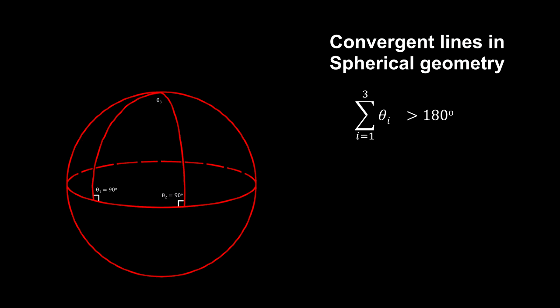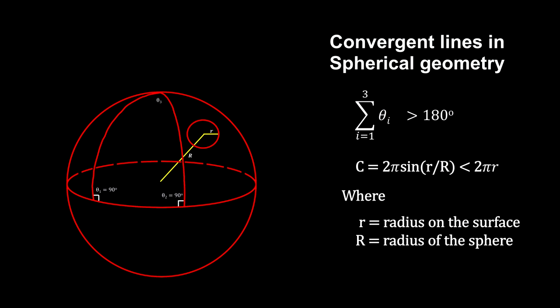Here, the sum of the angles of a triangle is greater than 180 degrees. And the circumference of a circle is less than 2 pi times its radius. This is spherical geometry. It represents space with a positive curvature.